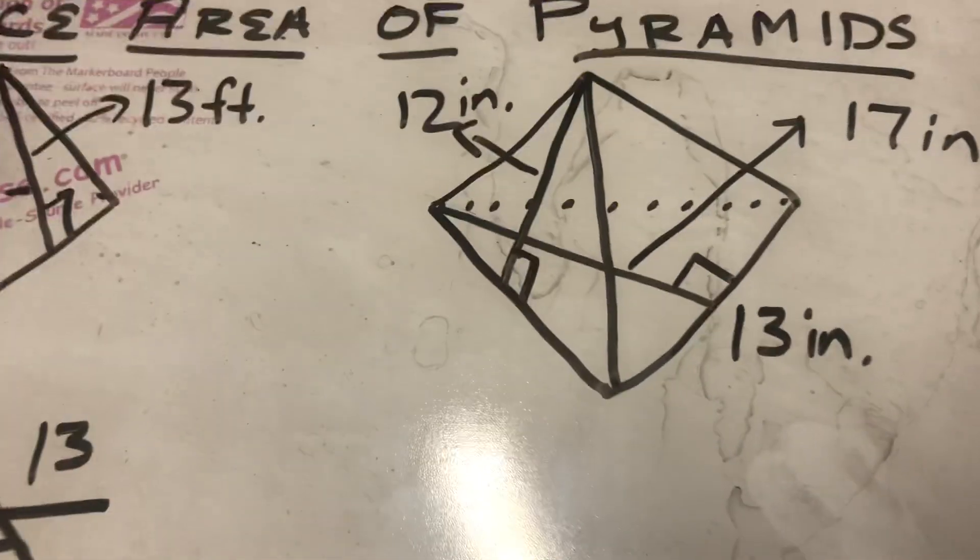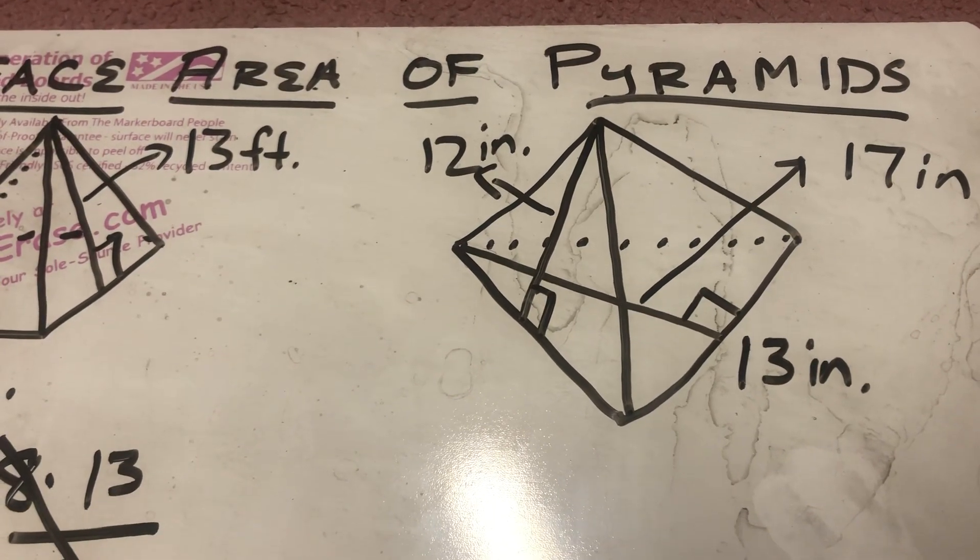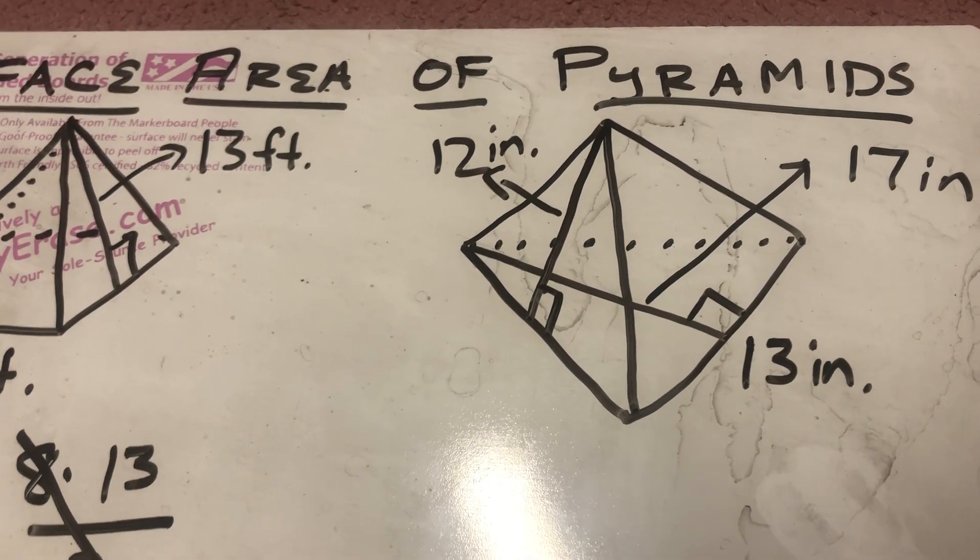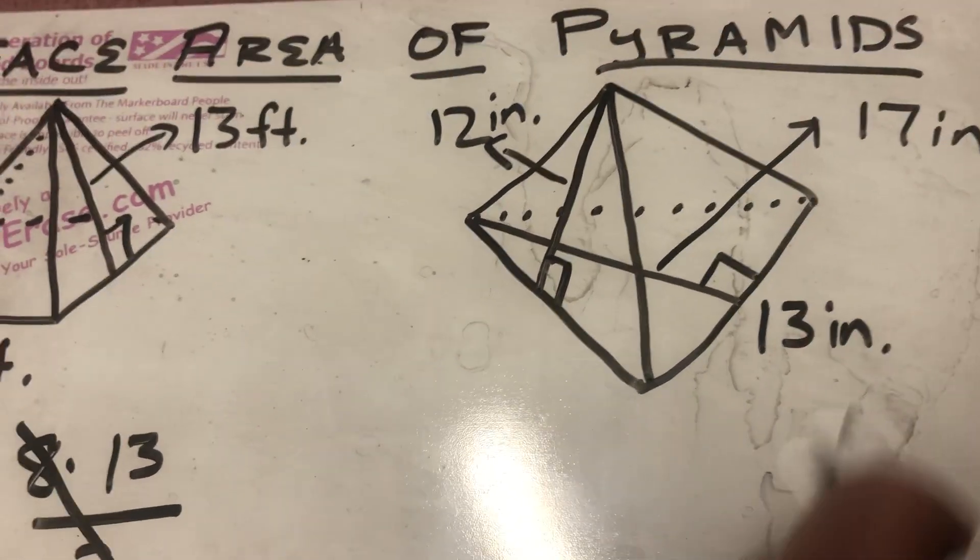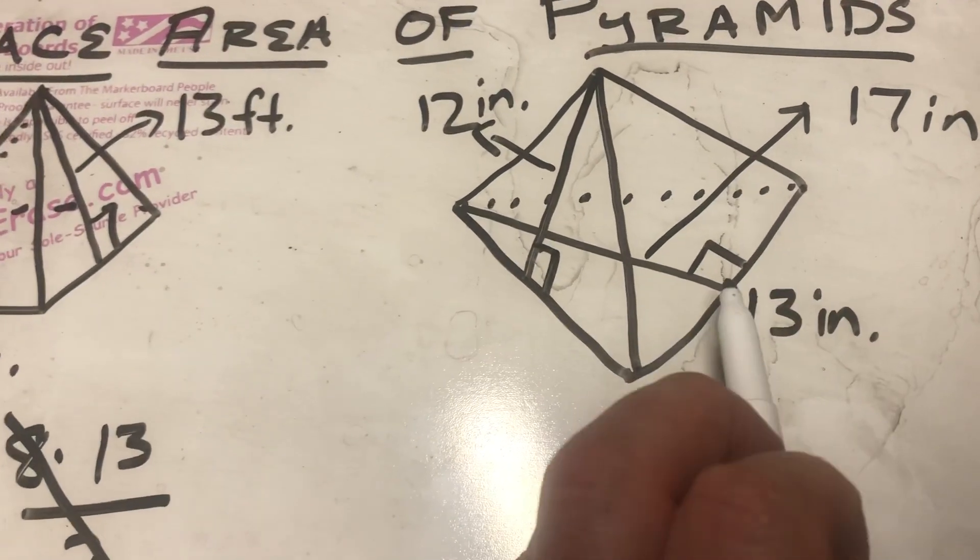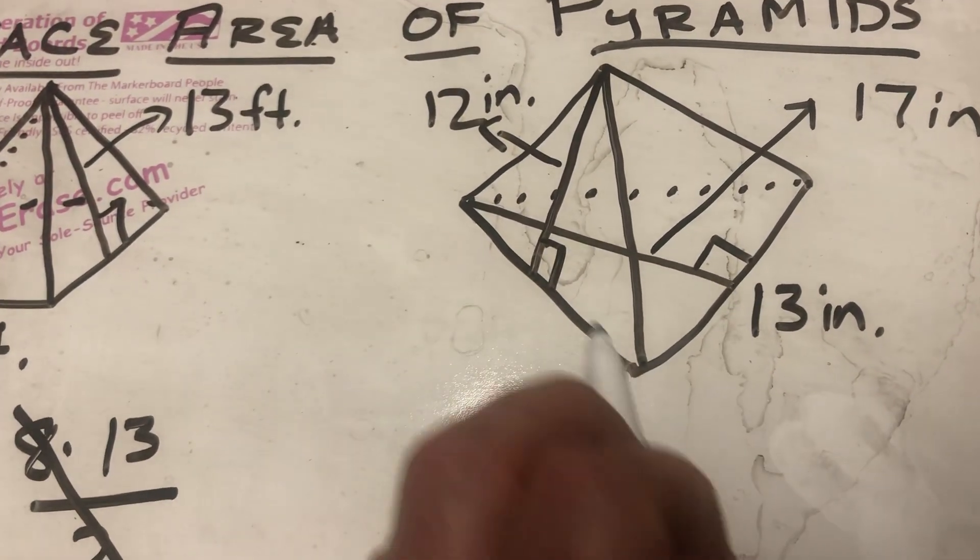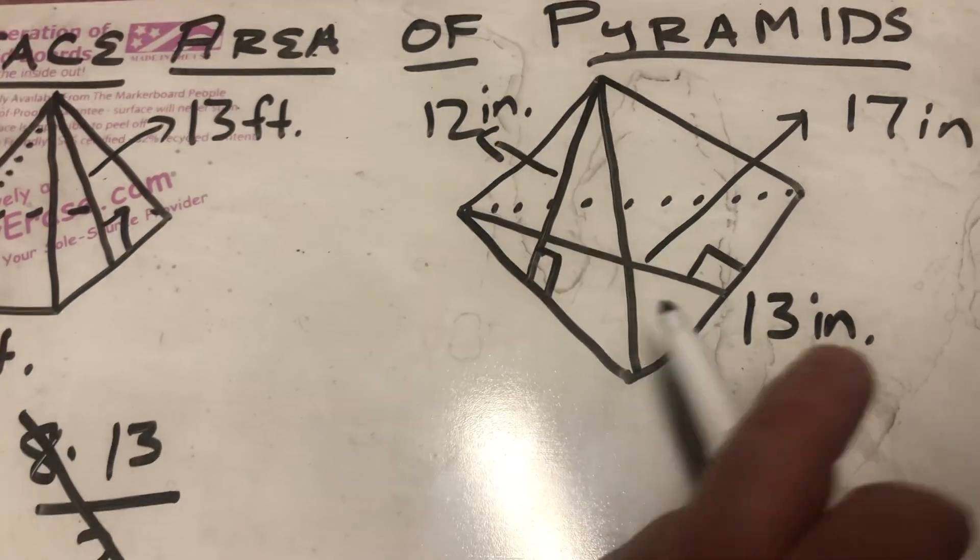So, here I have a triangular pyramid. Now, once again, it's a regular pyramid, which means these are all going to be 13. So, 13, my height, okay, this is not a right angle here. So, from top to bottom, it's 17.